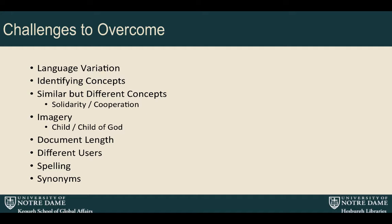Other things we were paying attention to included imagery language. Catholic social teaching has a lot of imagery language, especially talking about 'child of God.' If someone is trying to compare these two fields and bridge them, they might only be interested in texts that talk about 'child' in the biological sense, since that's the sense you typically want in human rights. We were also concerned about document length, wanting to focus on paragraphs, and handling different user issues with spelling and synonyms.